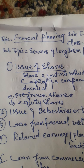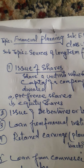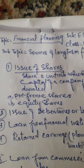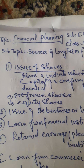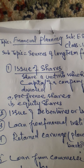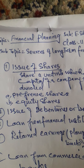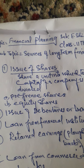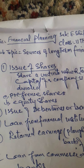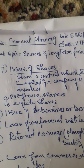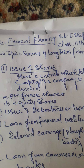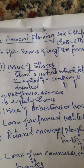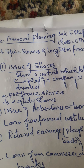The second source of long-term finance is the issue of debentures or bonds. What is a debenture? A debenture or a bond is an acknowledgement of a debt. It is a certificate issued by the company under its seal acknowledging a debt due by its holders.